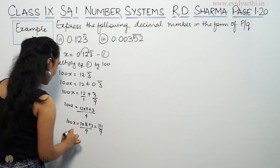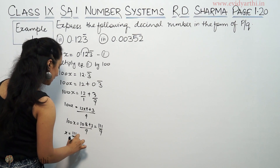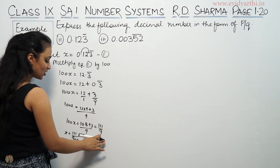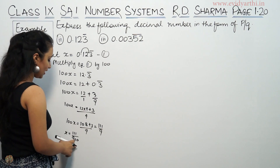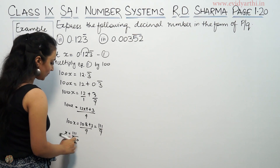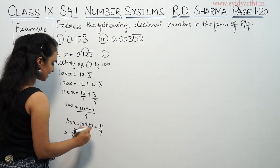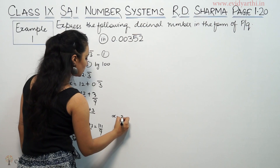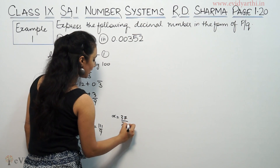So x is equal to 111 by 900. Simplifying: 3 goes into 111 giving 37, and 3 goes into 900 giving 300. So x is equal to 37 by 300.